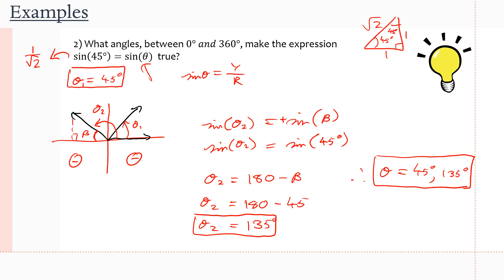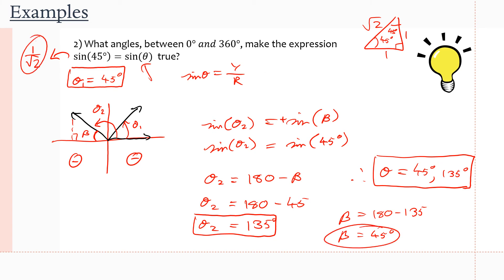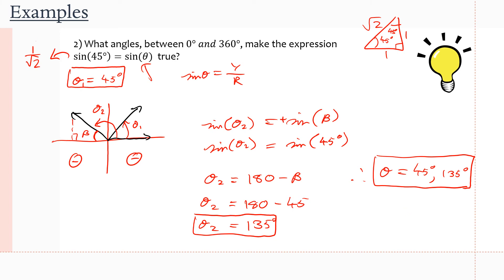If we want to check: take 135° as our principal angle, compute β = 180 − 135 = 45°, then take the sine ratio of β. If it gives 1 over √2, our answer is correct because it equals the left side of the equation. That's how you can verify, and that's it. Let's move on.